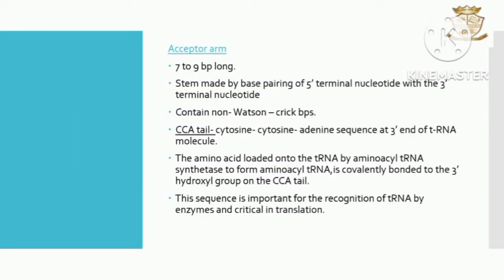The acceptor arm consists of a stem and a loop. It consists of a seven to nine base pair long stem, formed by base pairing of the 5' terminal nucleotide with the 3' terminal nucleotide, and contains non-Watson-Crick base pairs.